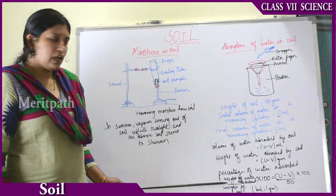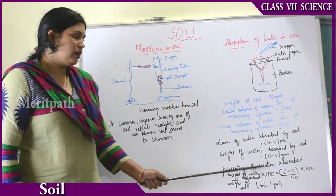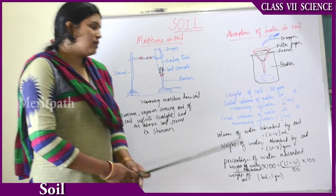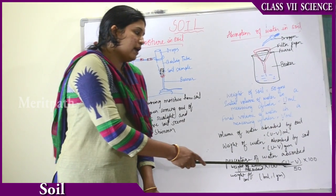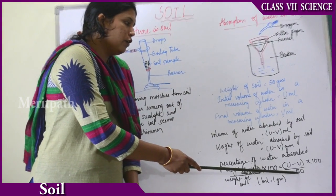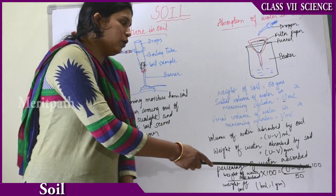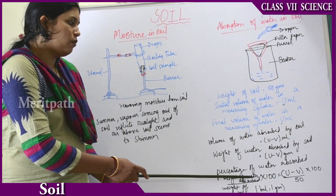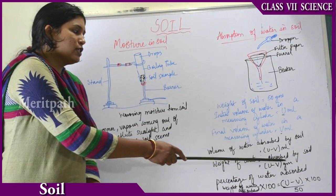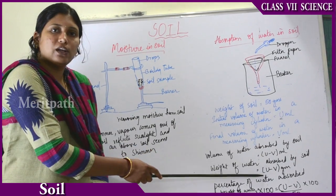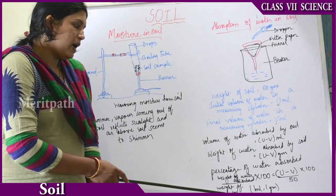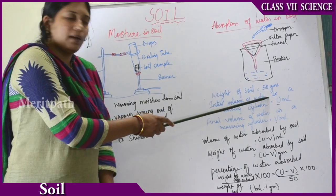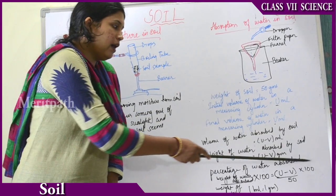To calculate the percentage of water absorbed by the soil, the formula is: (U minus V) divided by 50, multiplied by 100. That is the weight of the water absorbed — U minus V — divided by the weight of the soil, which is 50 grams, multiplied by 100.